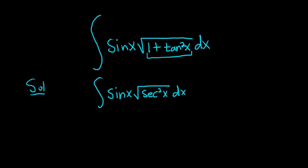When you take the square root of secant squared, you just get secant. So this is sine x, secant x, dx.